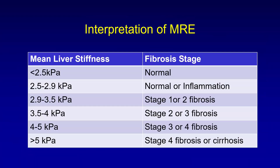The values for interpreting MRE results are: less than 2.5 kilopascals is normal; 2.5 to 2.9 kilopascals is normal or inflammation; 2.9 to 3.5 kilopascals is stage 1 or 2 fibrosis; 3.5 to 4 kilopascals is stage 2 or 3 fibrosis; 4 to 5 kilopascals is stage 3 or 4 fibrosis; and greater than 5 kilopascals is stage 4 fibrosis or cirrhosis. These values are endorsed across all vendors because most currently use the Resoundant active driver and the same passive driver — unlike ultrasound values, which differ from machine to machine.